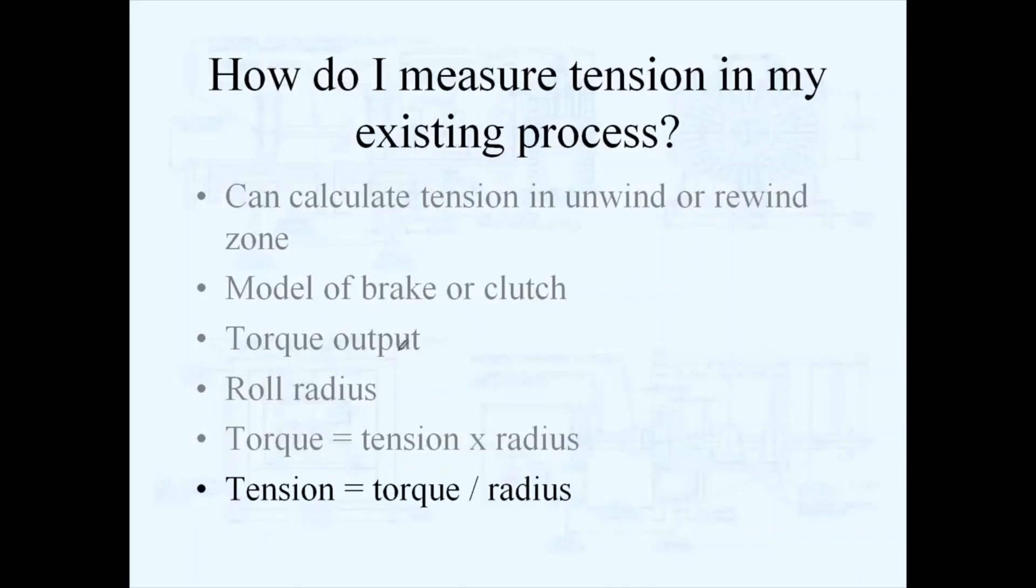If you know the torque output of the brake and you know the roll radius, you can just plug those numbers into this equation, and that will tell you what the tension is across the web. You have to divide the total tension by the web width to know PLI, or pounds per linear inch.